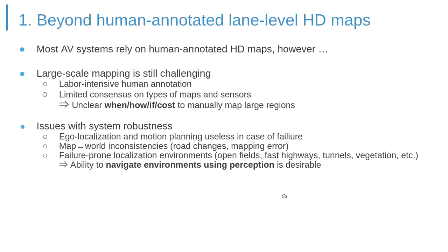Another issue is system robustness. Conventionally, when localization or map loading fails, the vehicle is rendered completely useless. In the real world, there will be inconsistencies like road changes and mapping errors that need to be observed and handled in real time. In some environments like open fields and fast highway driving, the exact localization approach might not even be the appropriate one. For these reasons, even if a vehicle primarily relies on an HD map, it is very desirable to also operate based on the actually perceived road scene.